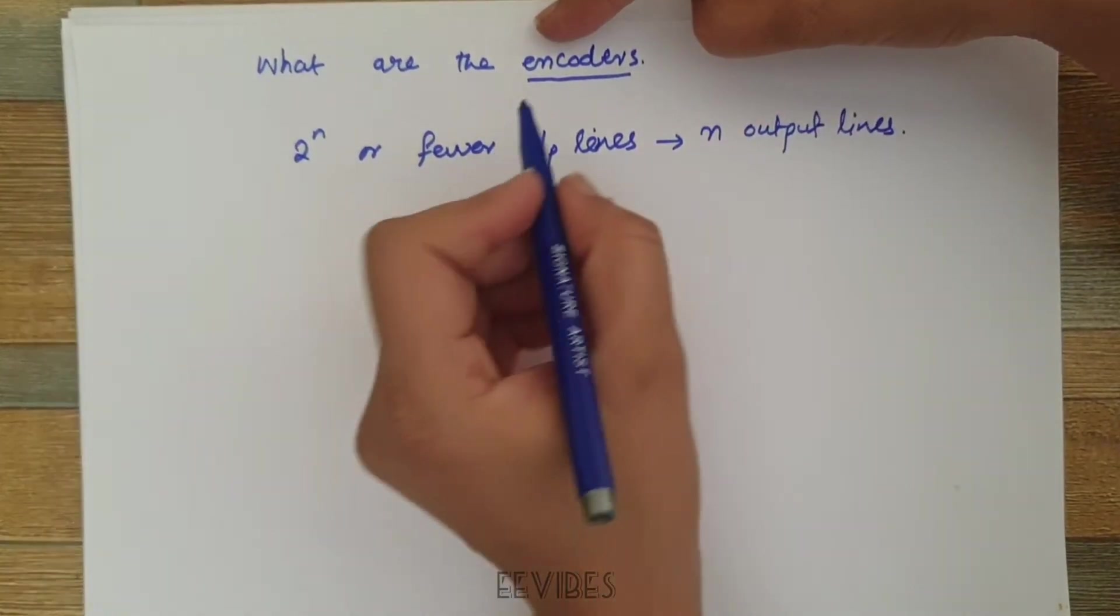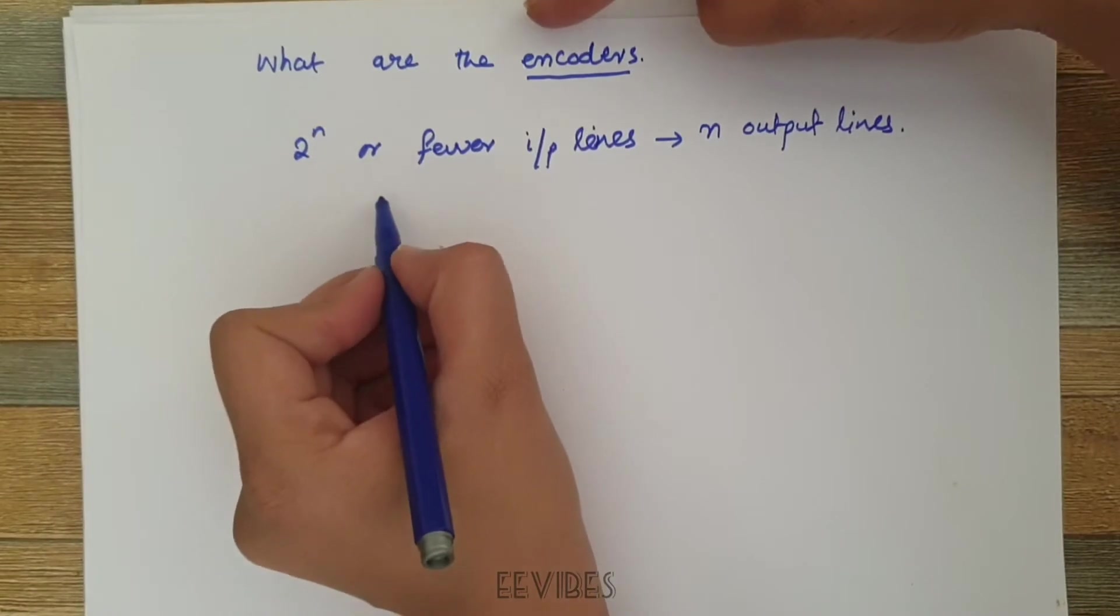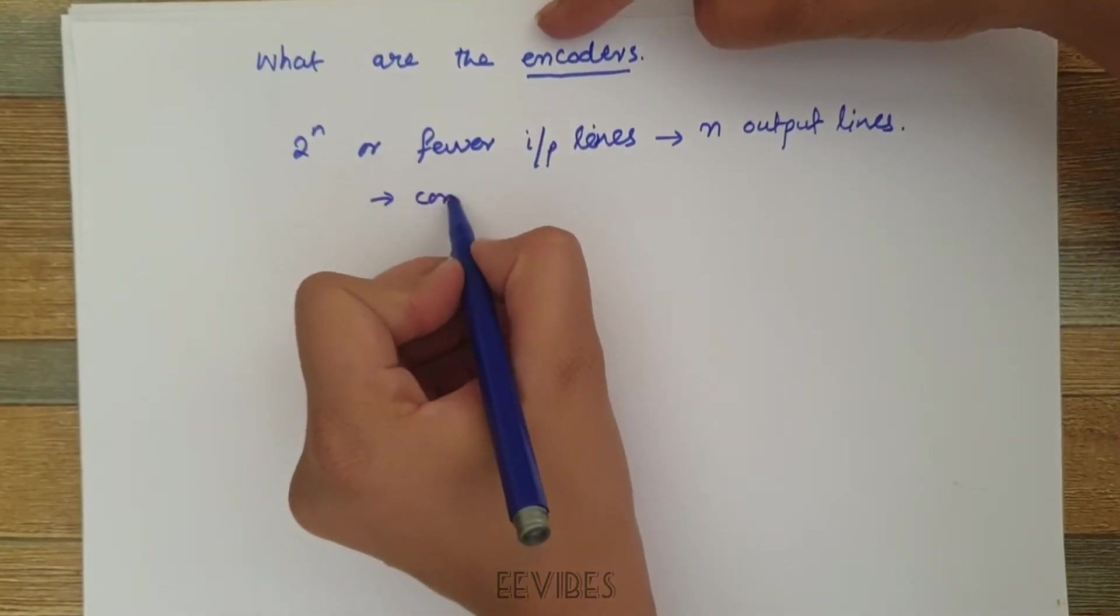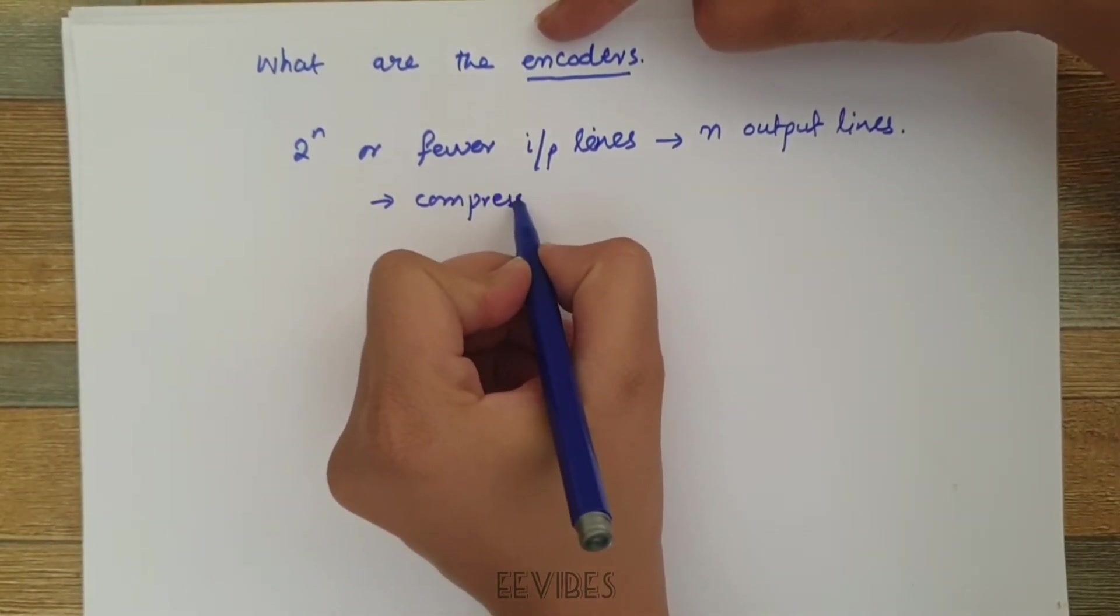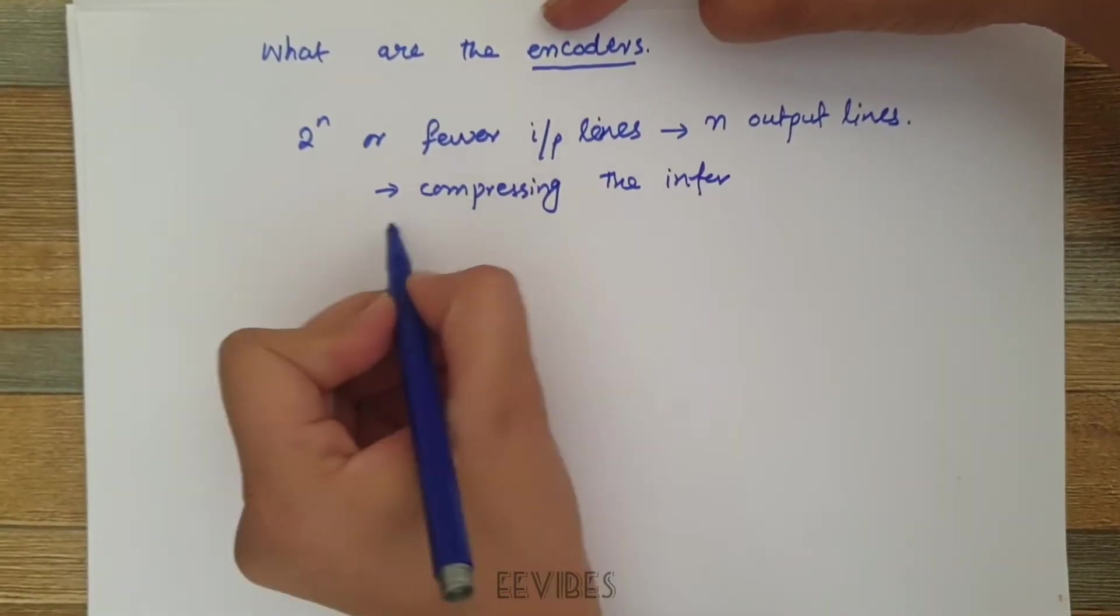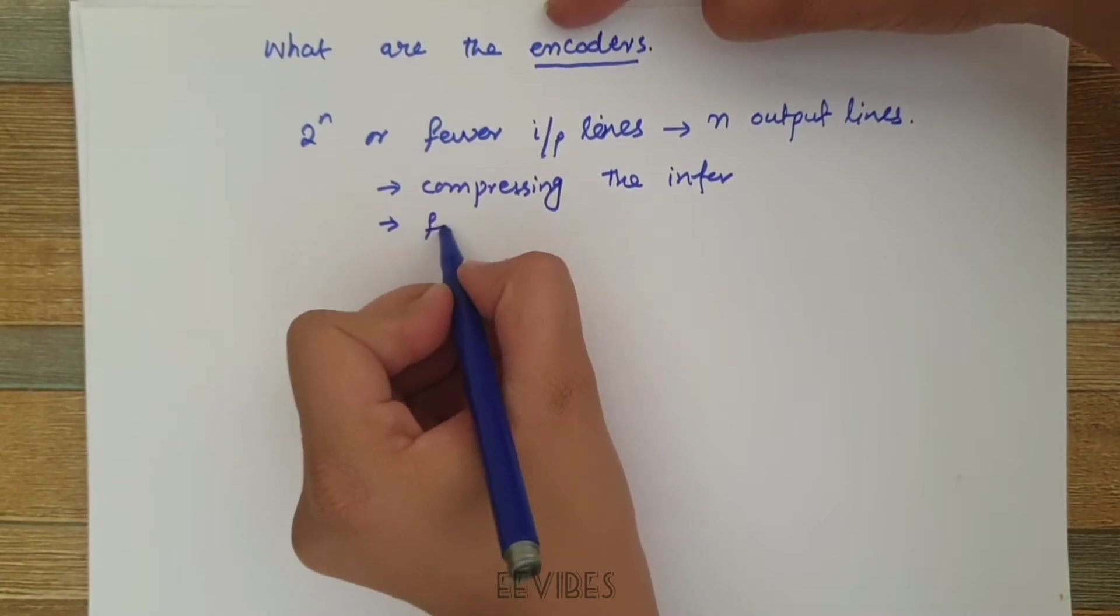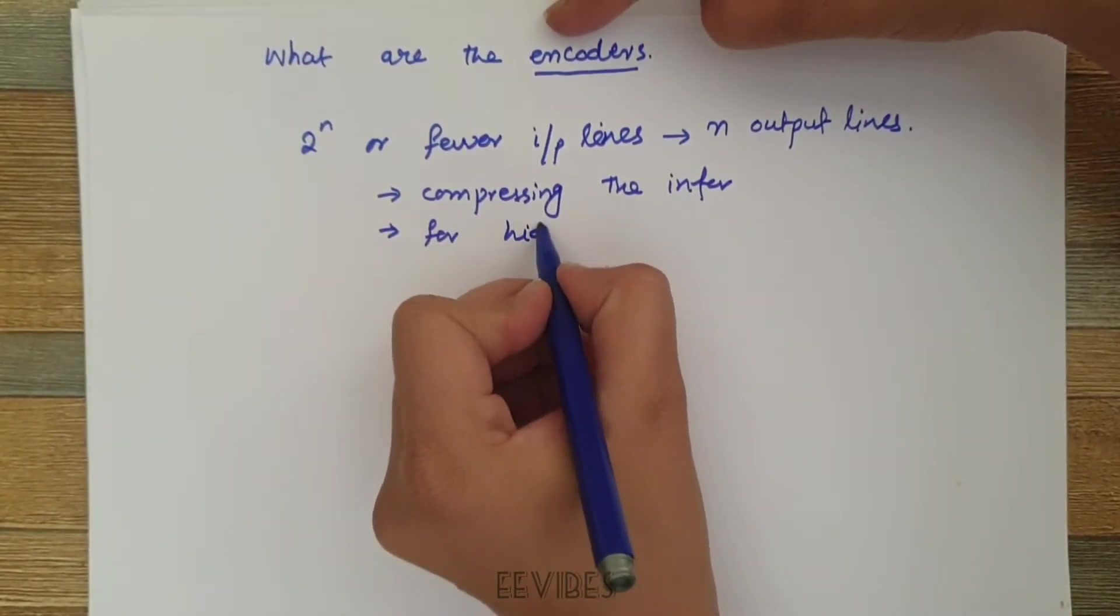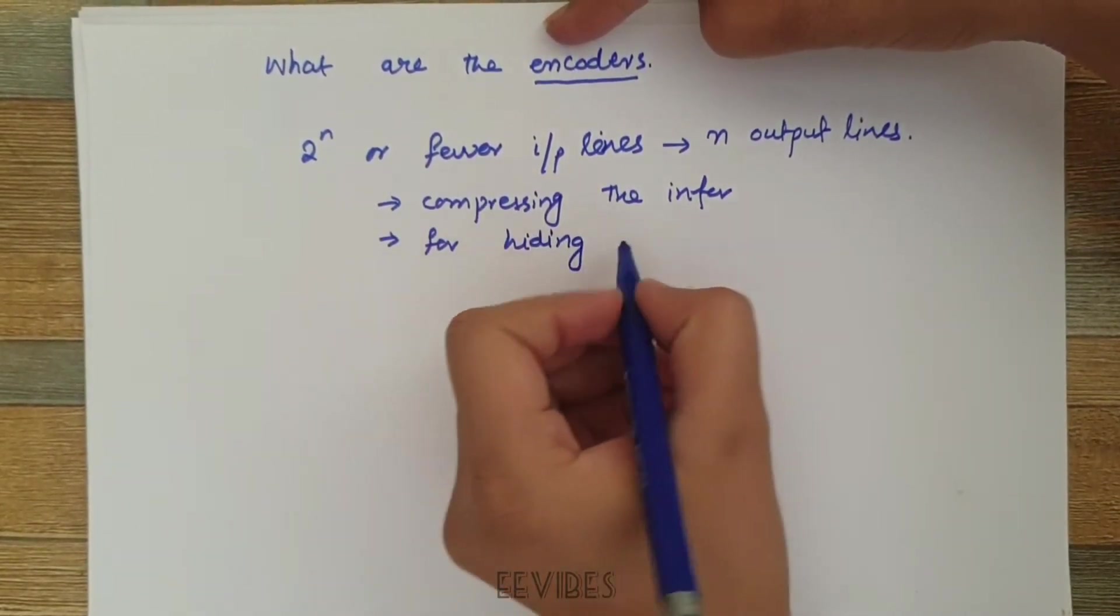So encoders are used for compressing information or they are also used for hiding the actual information.